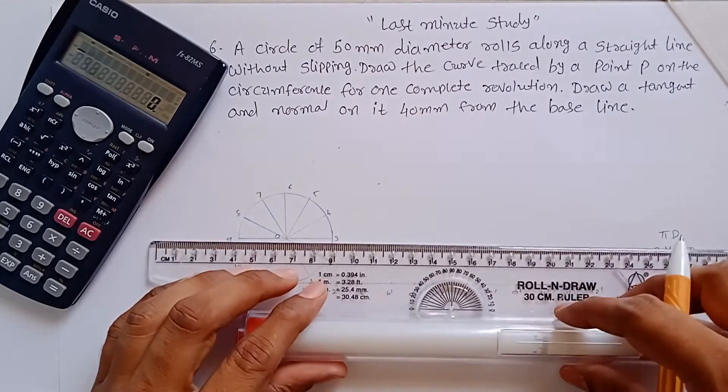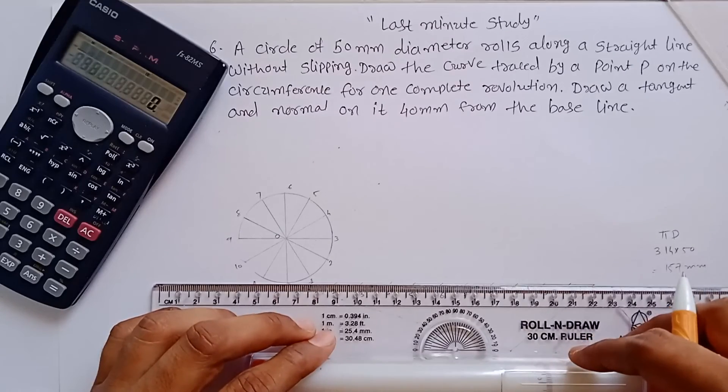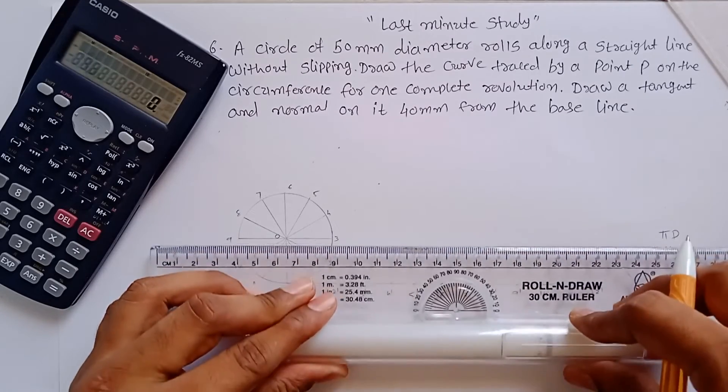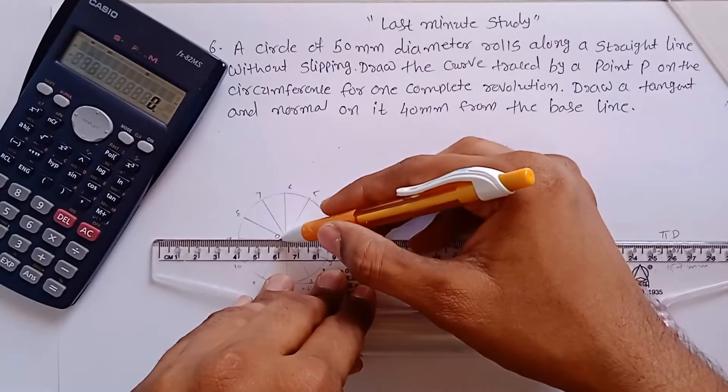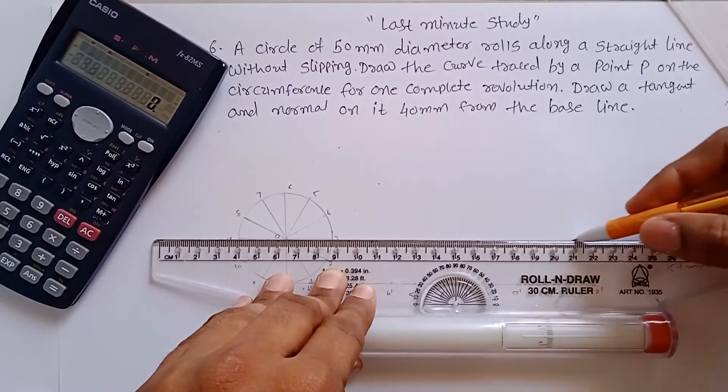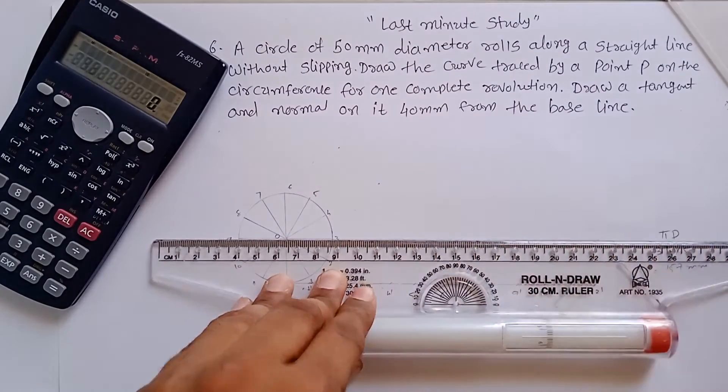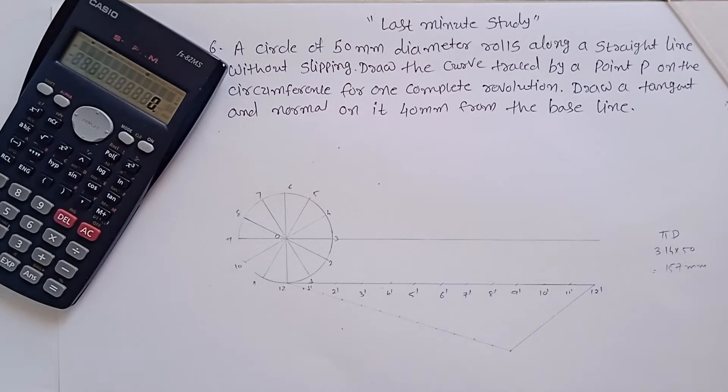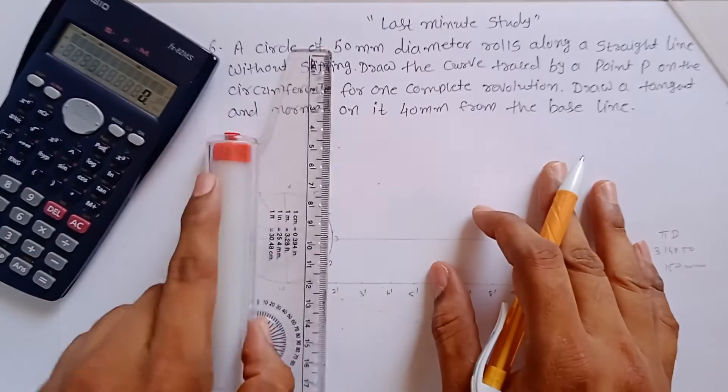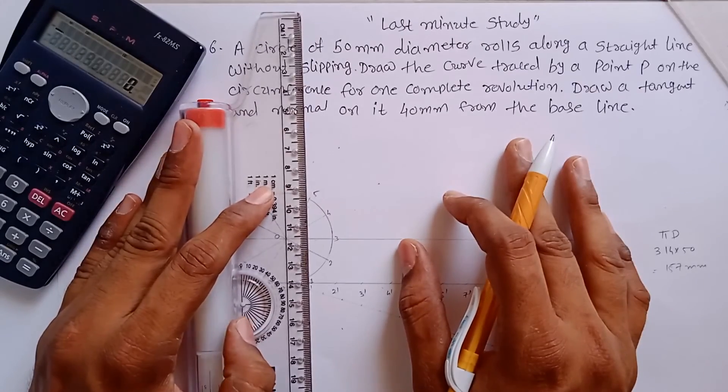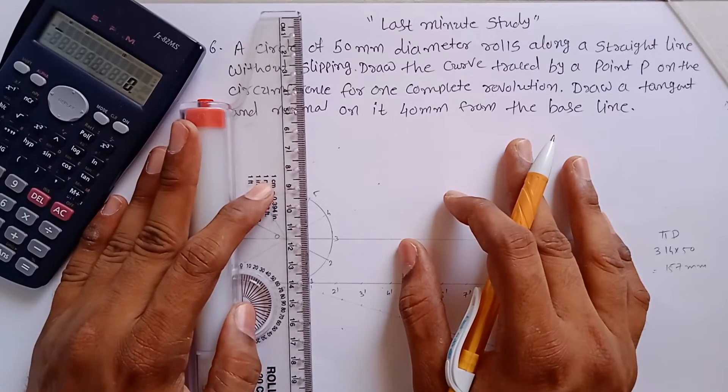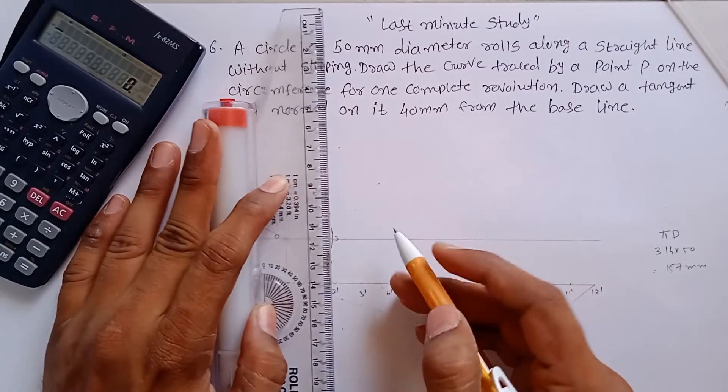Now draw a horizontal line from the center point O, and the line must be passing from O to 3 like this. This line - now transfer or we can say draw vertical lines from each and every part which you drew on the πD line. This is the center line actually.